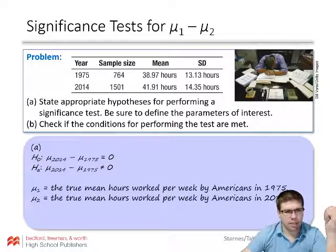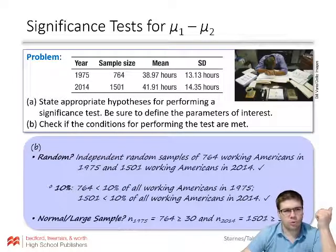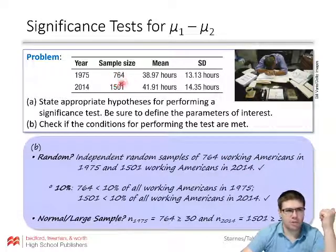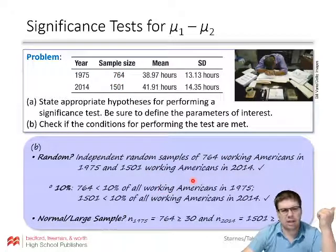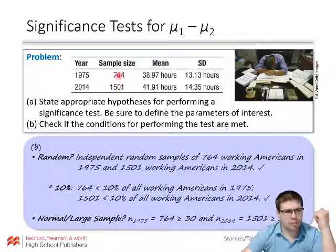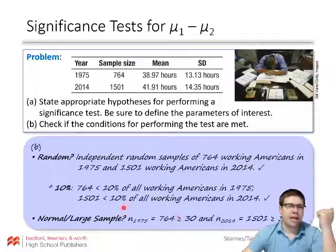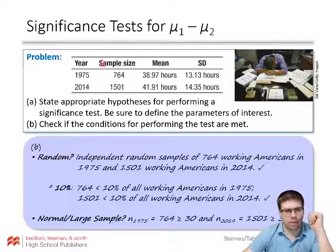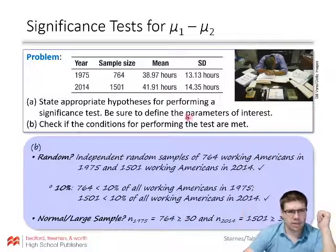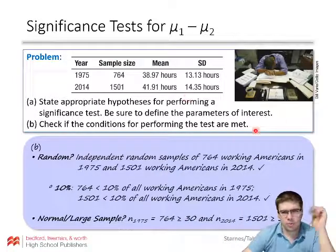Next, checking the conditions. Both samples were randomly selected. We'll assume both are less than 10% of their respective populations — Americans in 1975 and Americans in 2014. For the normal condition, our sample sizes are very large, so we're all set. We don't know the shape, but the Central Limit Theorem has us covered.